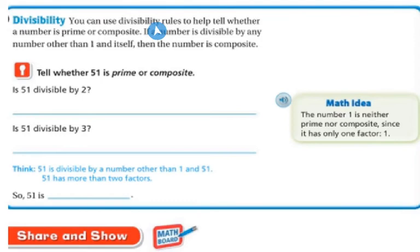Divisibility. You can use the divisibility rules that we did, remember, a few days ago to help to tell whether a number is prime or composite. If a number is divisible by any number other than 1 and itself, then the number is composite. So tell whether 51 is prime or composite. First of all, is 51 divisible by 2? No. Is 51 divisible by 3? So remember to find out if it's divisible by 3, you add them up, and if the sum is divisible by 3, then you know it's divisible by 3. So 5 plus the 1 equals 6, and we know that 3 goes into 6. So yes, 51 is divisible by 3. So 51 is going to be a composite number.